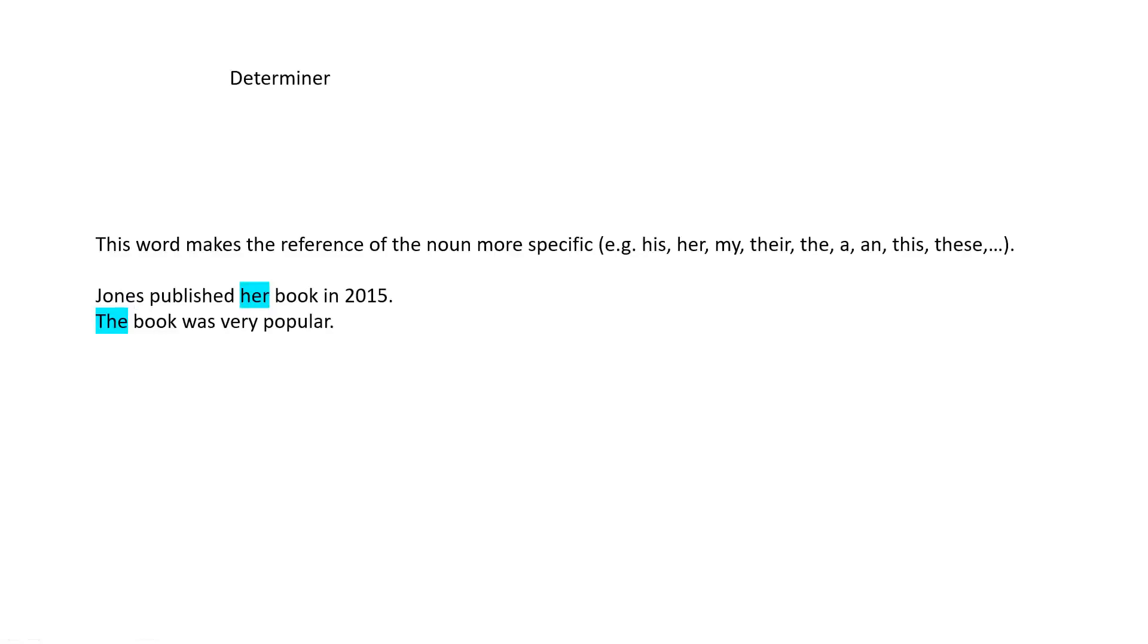The determiner. This word makes the reference of the noun more specific. Examples: his, her, my, their, a, an, the, this, these. As you can see, they can be possessive adjectives or can be articles, like the, a, an are articles. Or could be adjectives that show you which one you are pointing. For example, this, that, these, those.